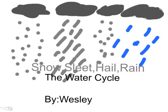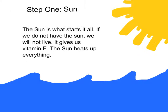The Water Circle by Wesley. Step 1: Sun. Sun is what starts it all. If we do not have the sun, we will not live. It gives us vitamin E. The sun heats up everything.